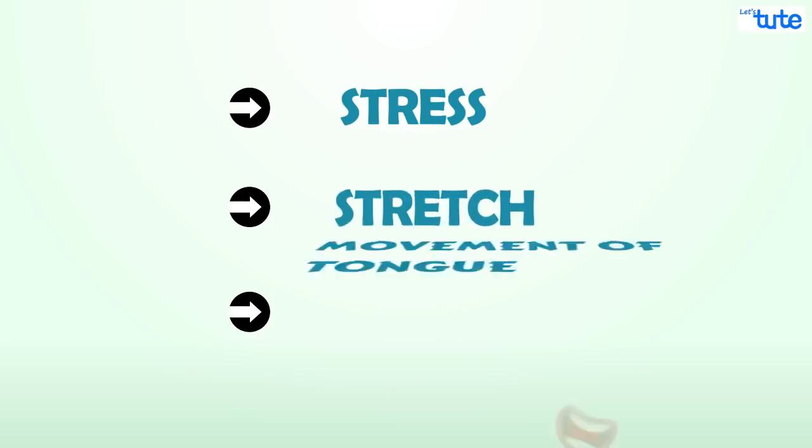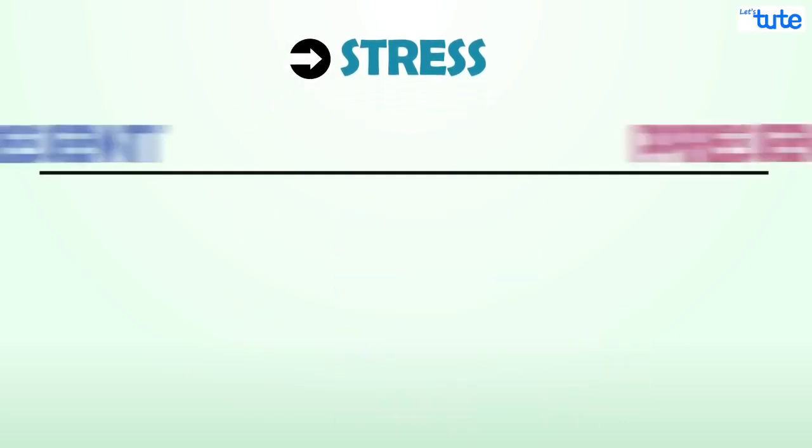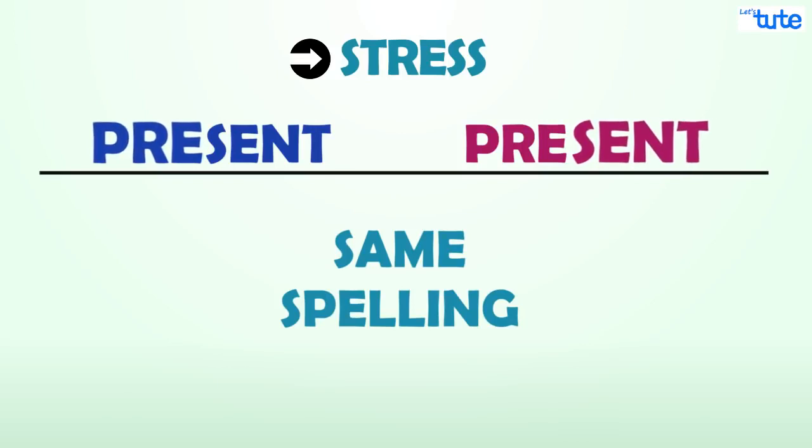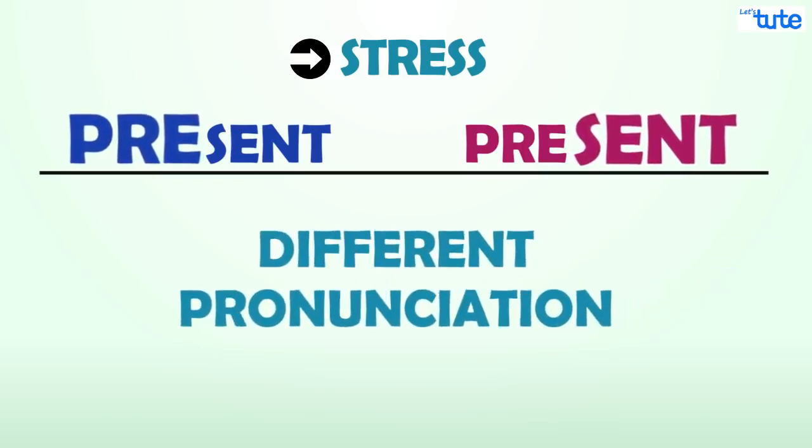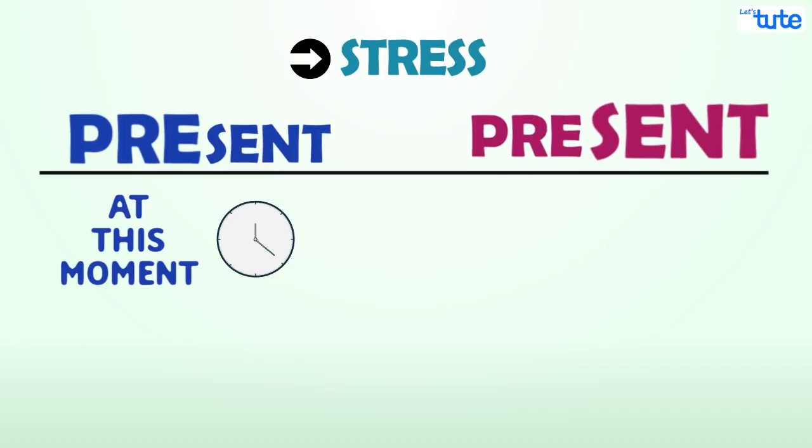Observe the movement of tongue. Let me give you a few examples on this. Here the word present has the same spelling, but the pronunciation changes with its usage at different places. Like present means at this moment, but present means to gift. The former is a noun and the latter is a verb.